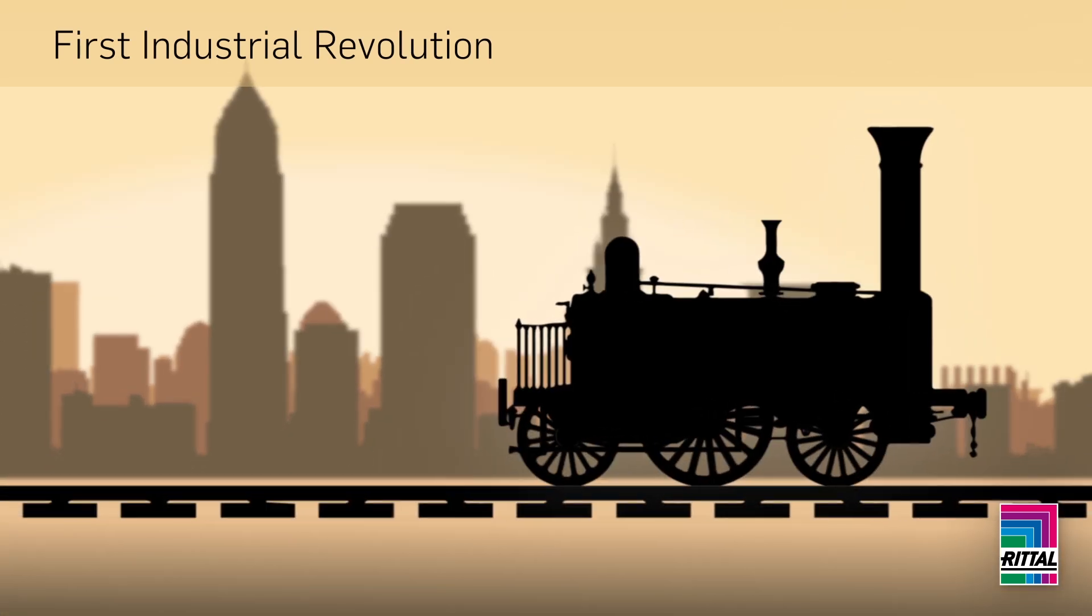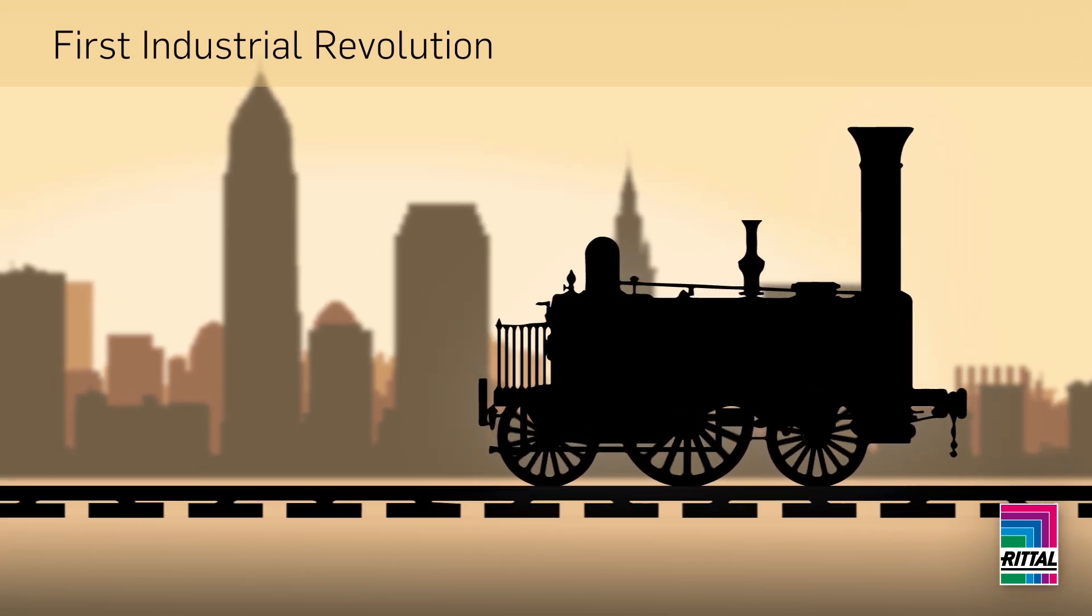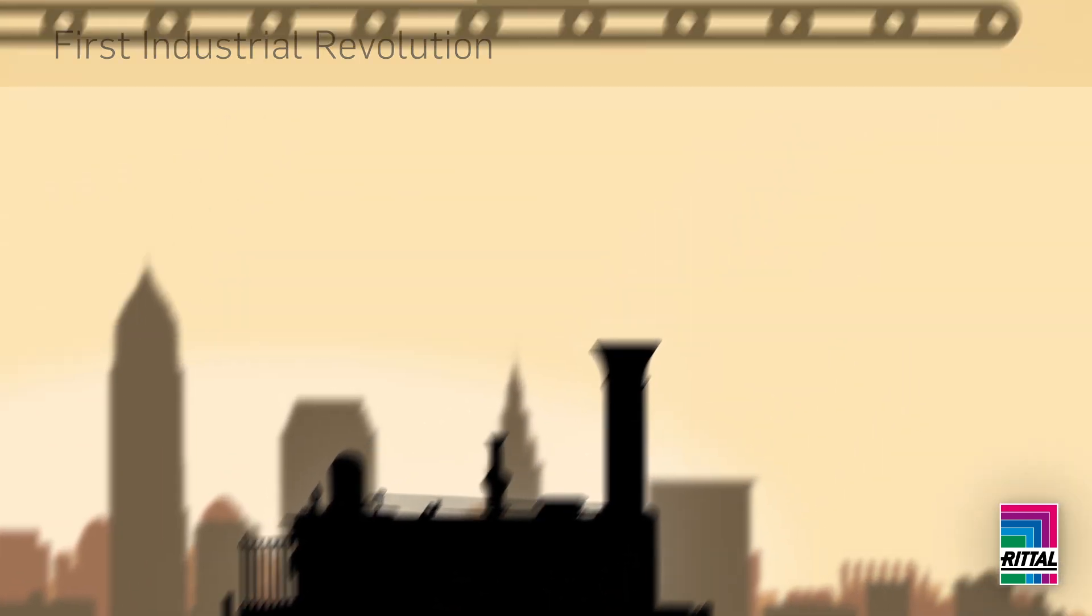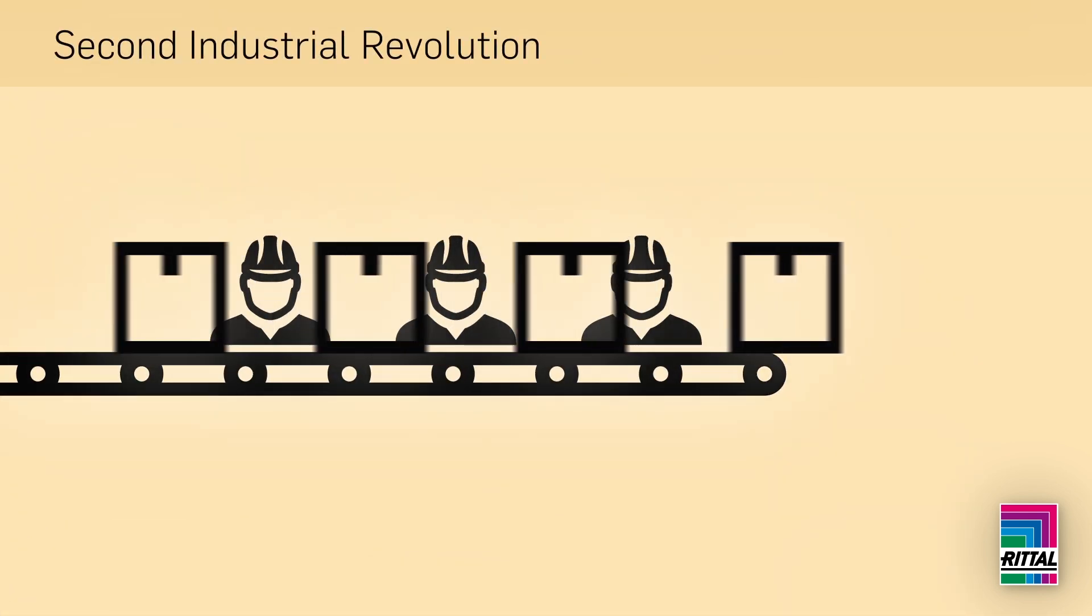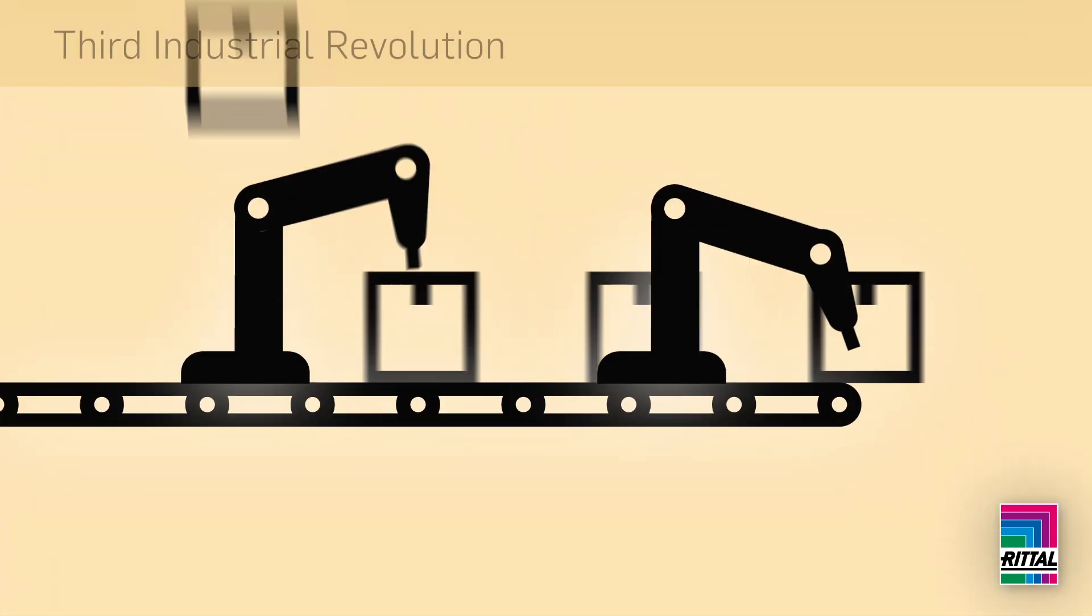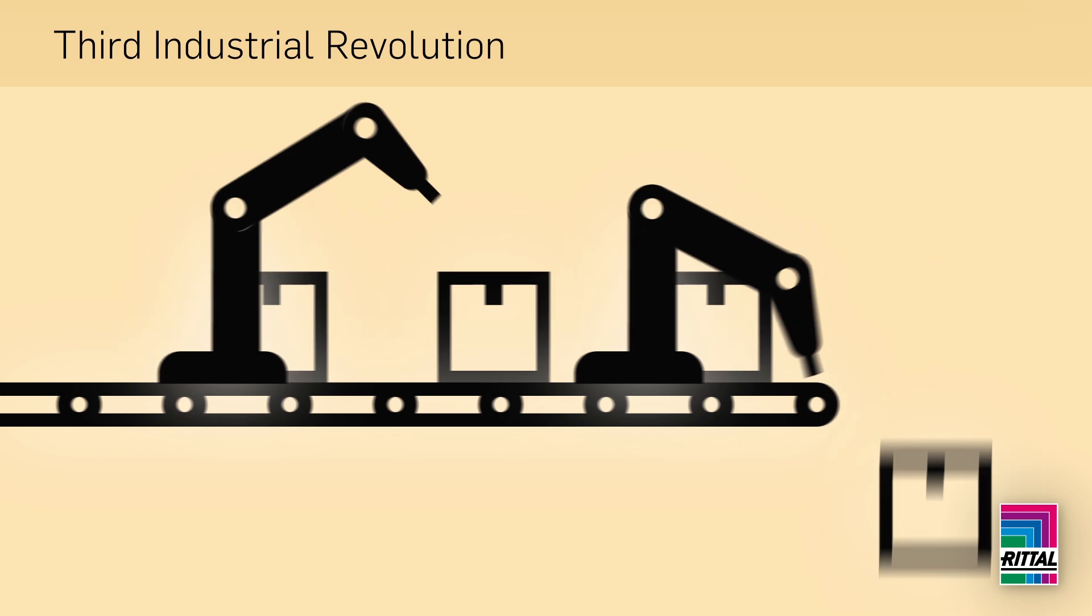In the 1700s, man harnessed water and steam to start the Industrial Revolution. The second Industrial Revolution brought us mass production, while the third increased industrial output through automation. We are now on the cusp of the fourth Industrial Revolution, Industry 4.0, where industrial decision-making and logistics moves to the cyber-physical level.